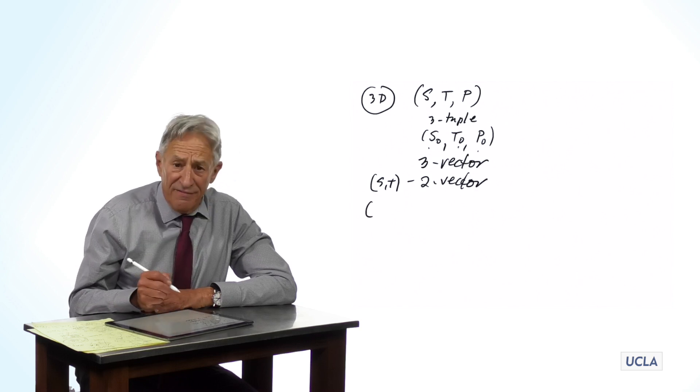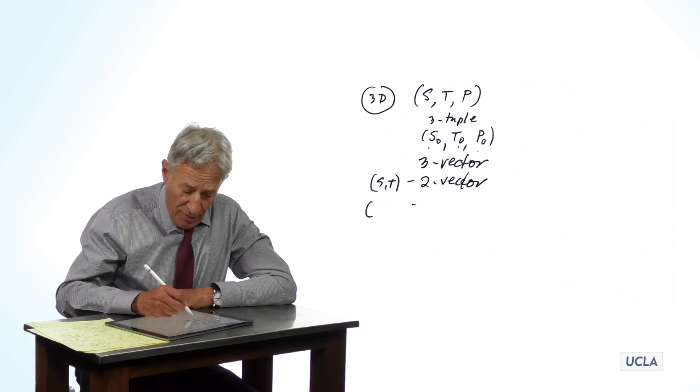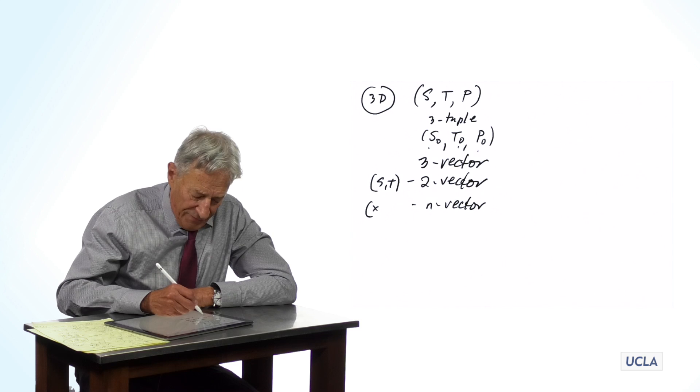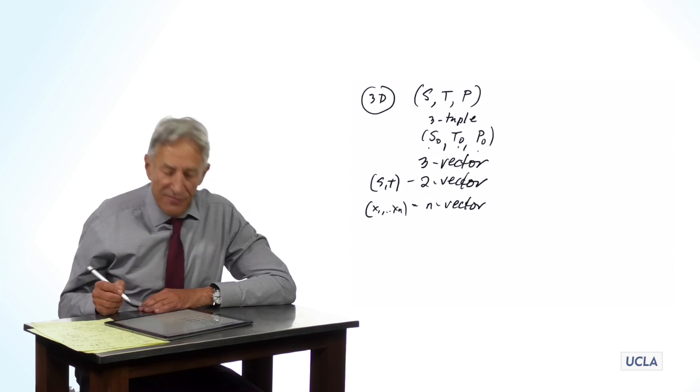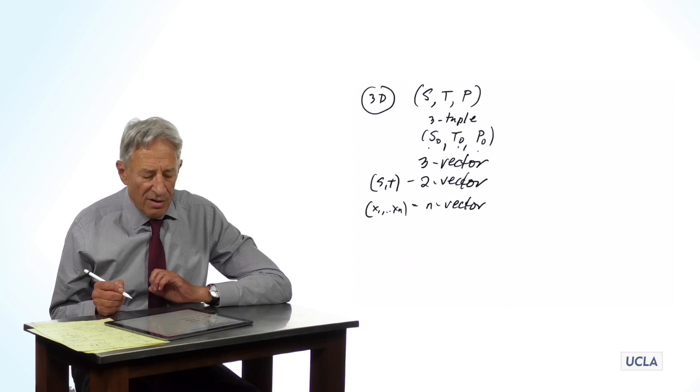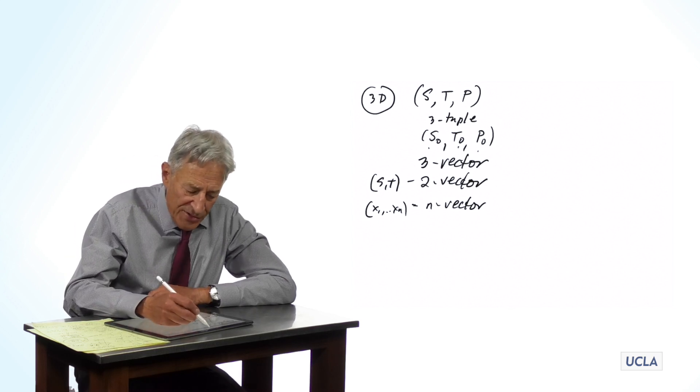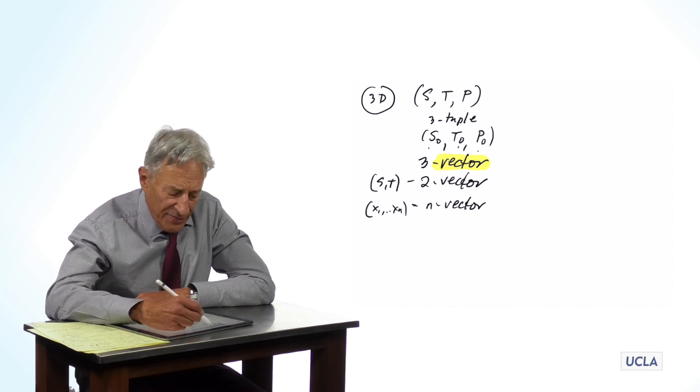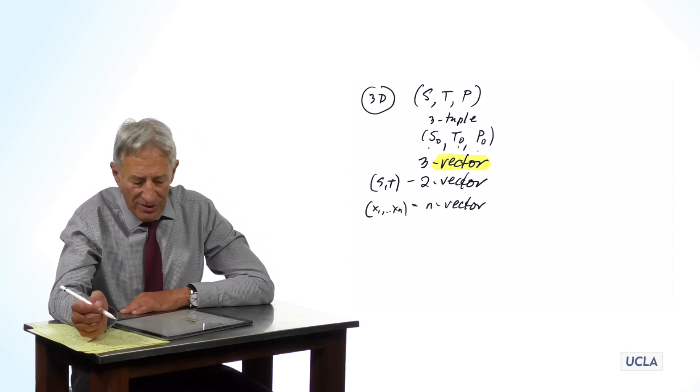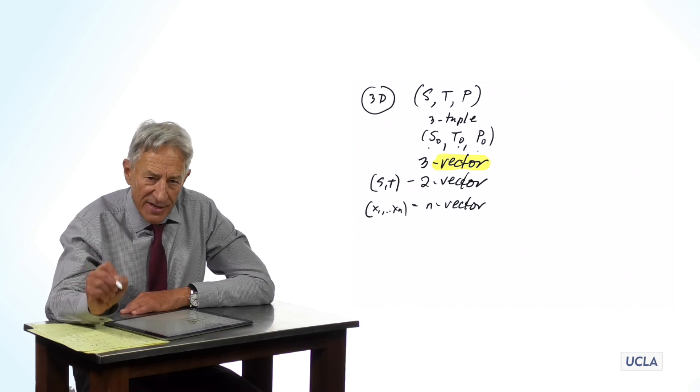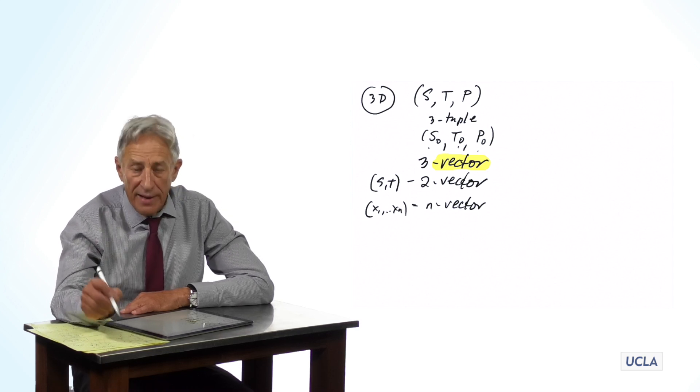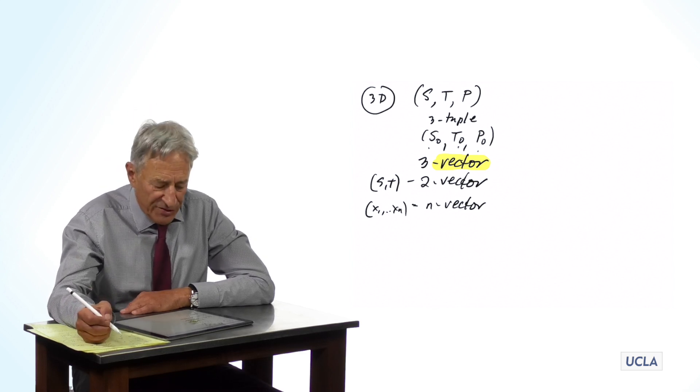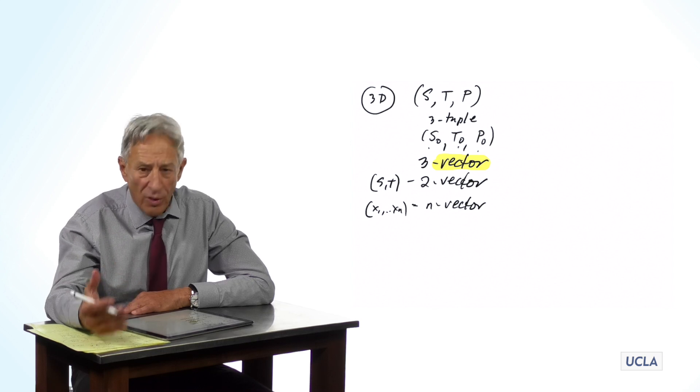And if we have n variables, then we have an n-vector. For example, if the variables are x1 through xn, that gives us an n-vector. So we learned this nice terminology here of vector. And the vector terminology is telling us that we represent the state of the system by an n-vector, where n is the number of variables. A one-vector, a two-vector, a three-vector, whatever.